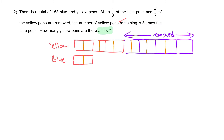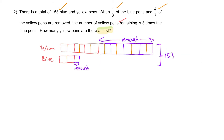Now we can add back the one third that was removed. Moving back to the first sentence: there is a total of 153 blue and yellow pens, so this entire model equals 153. Counting all units: 3, 6, 9, 12, 14 — 14 plus 3 gives 17 units.